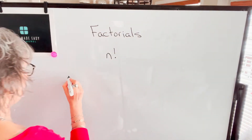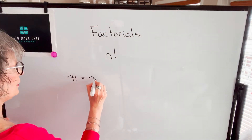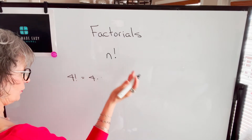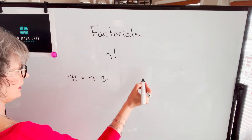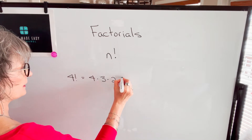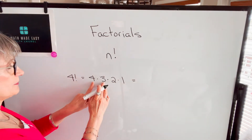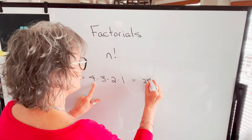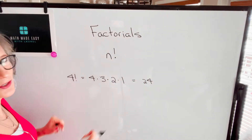Let me show you. If we have 4 factorial, that means 4 times the next lowest whole number, which is 3, then times 2, and then times 1. So 4 times 3 times 2 is 24. So we would say 4 factorial is 24.